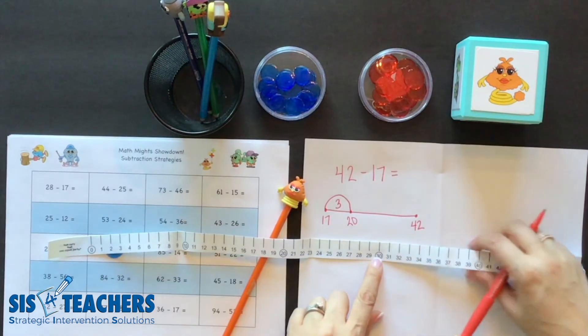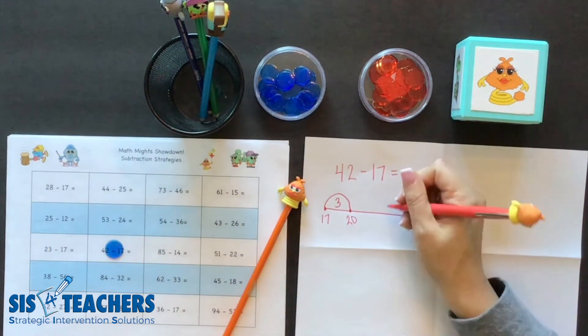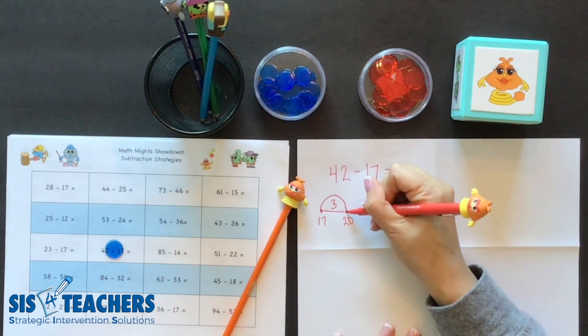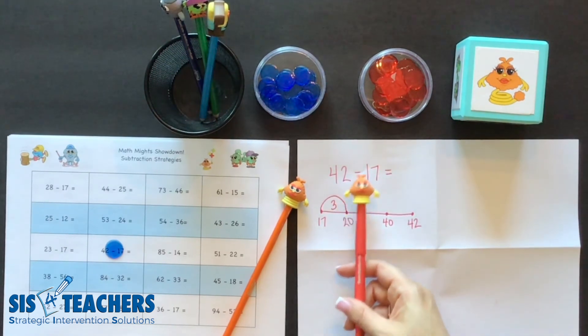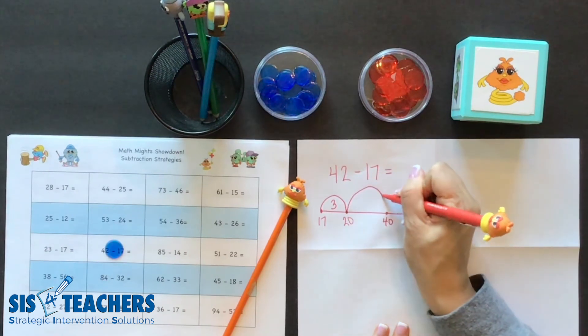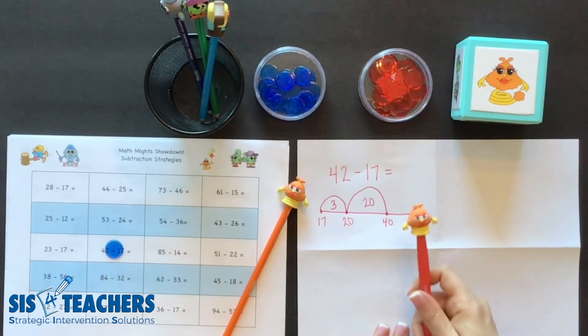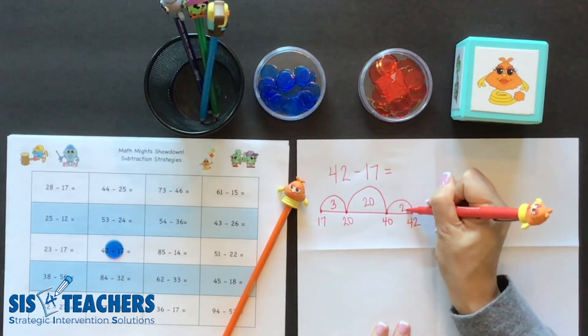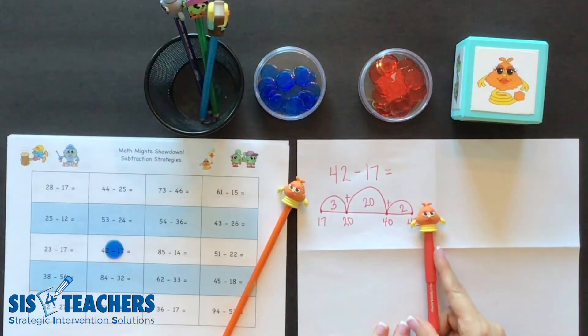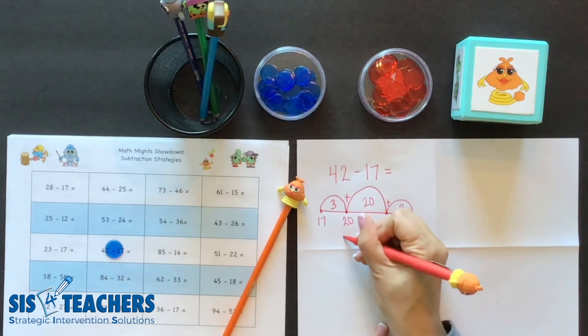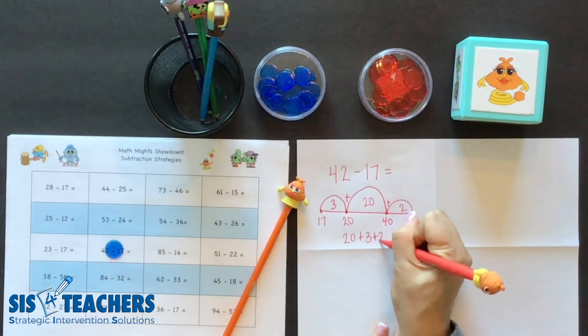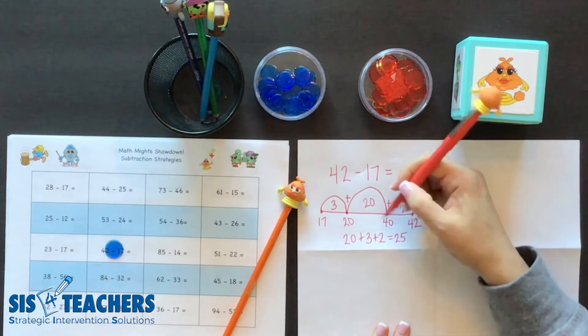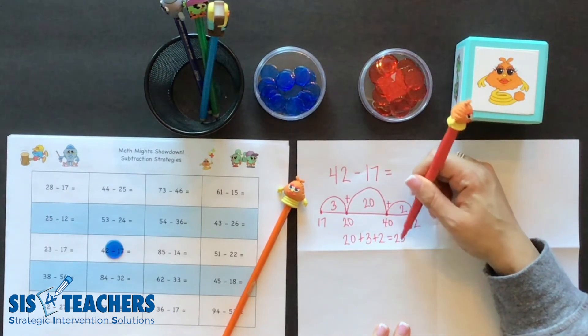So in between 17 and 20 is 3. Some students might have to hop to the 30 and then the 40. We're going to pretend that we know how to hop further, and we're going to go from the 20 all the way to 40 because Springling can hop a really long way. Once we go from the 40 to the 42, we know we went 2. Springling's strategy really looks at the distance between the two numbers. So we're going to add our 20 plus our 3 plus our 2, and I would show in this game that I have the answer 25. So the distance between 17 and 42 is 25 total.